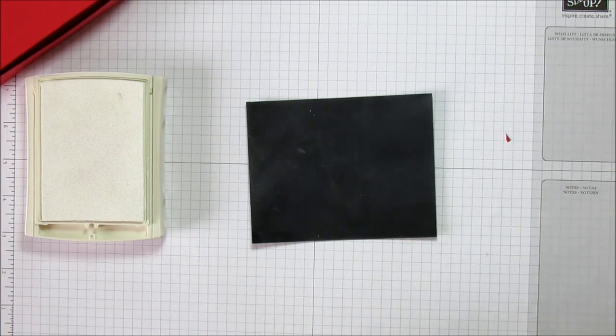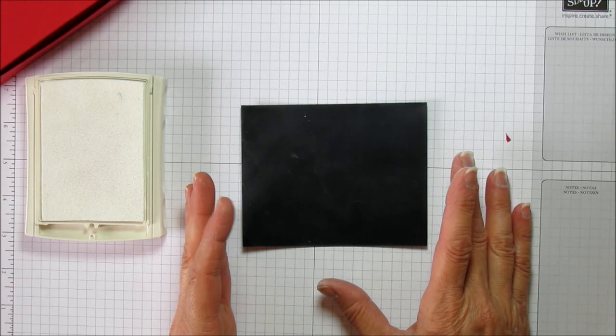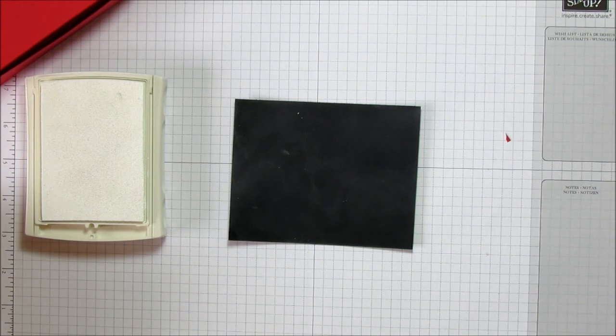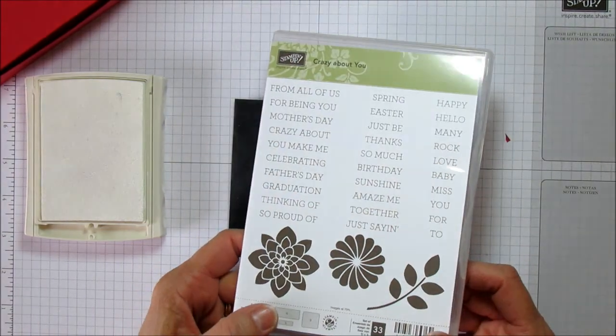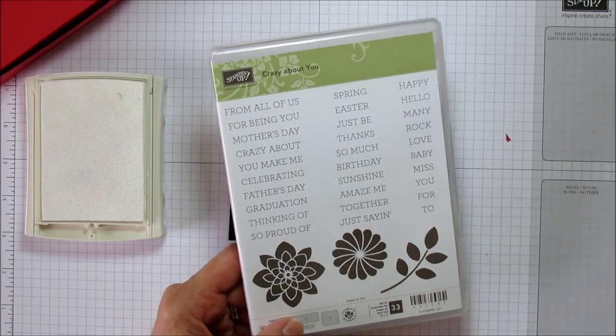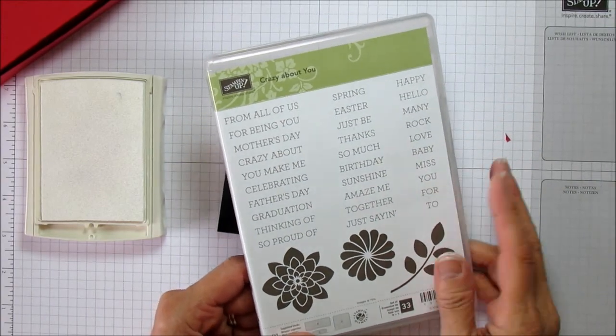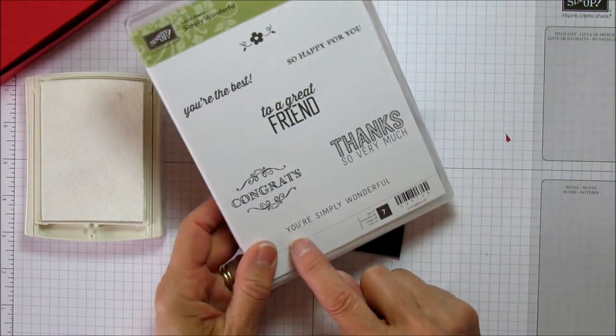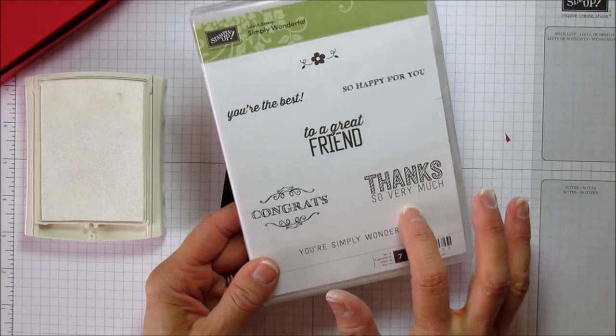I'm going to use our whisper white craft stamp pad. When you're using your stamps with this, be very careful not to touch it after you stamp it because this does stay wet a lot longer, so you will smear it. One tip is that you can use your embossing gun and heat it to speed up the drying process. We are using this Crazy About You stamp set and the Celebration set.